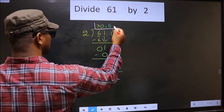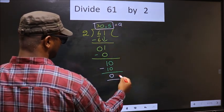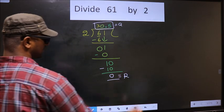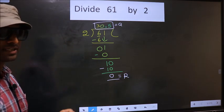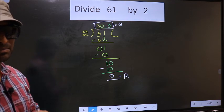So this is our quotient, and this is our remainder. Did you understand where the mistake happens? You should not do that mistake.